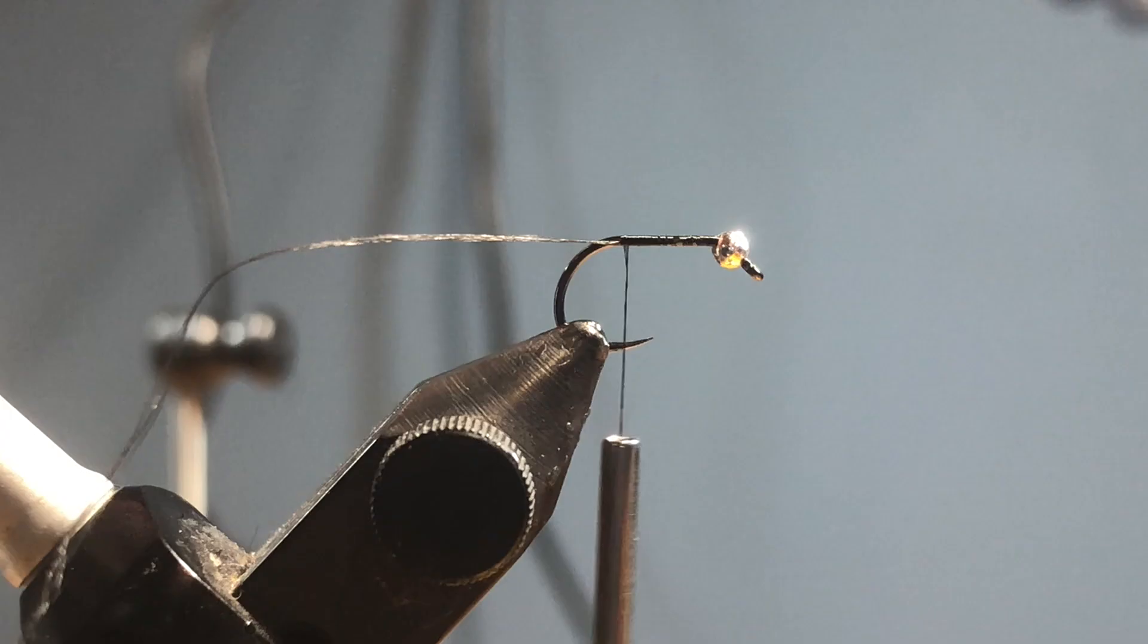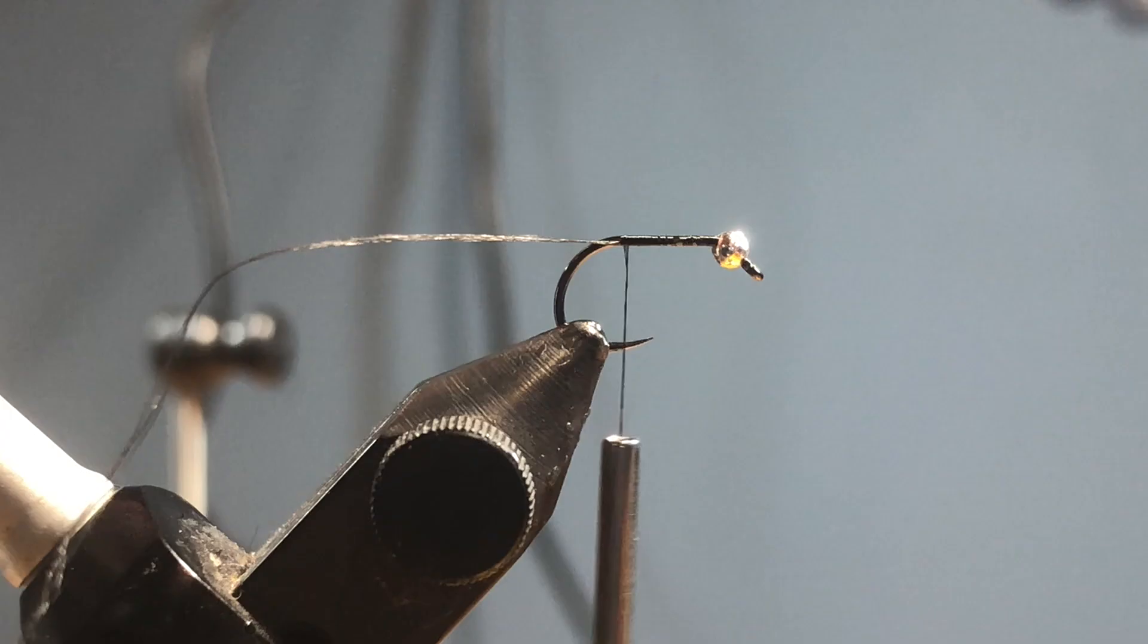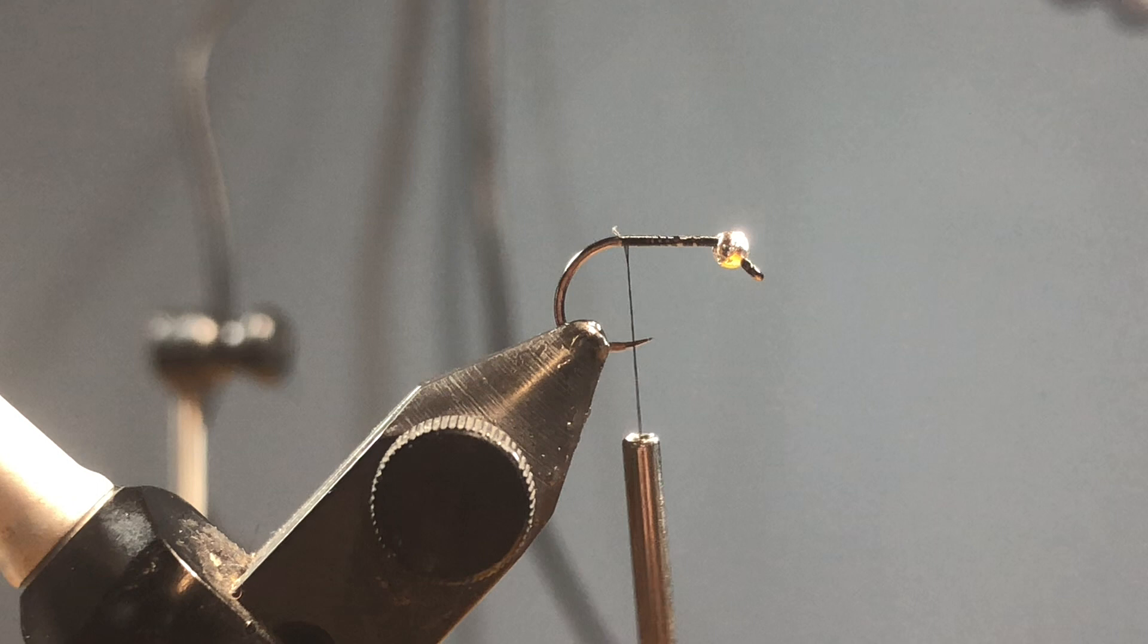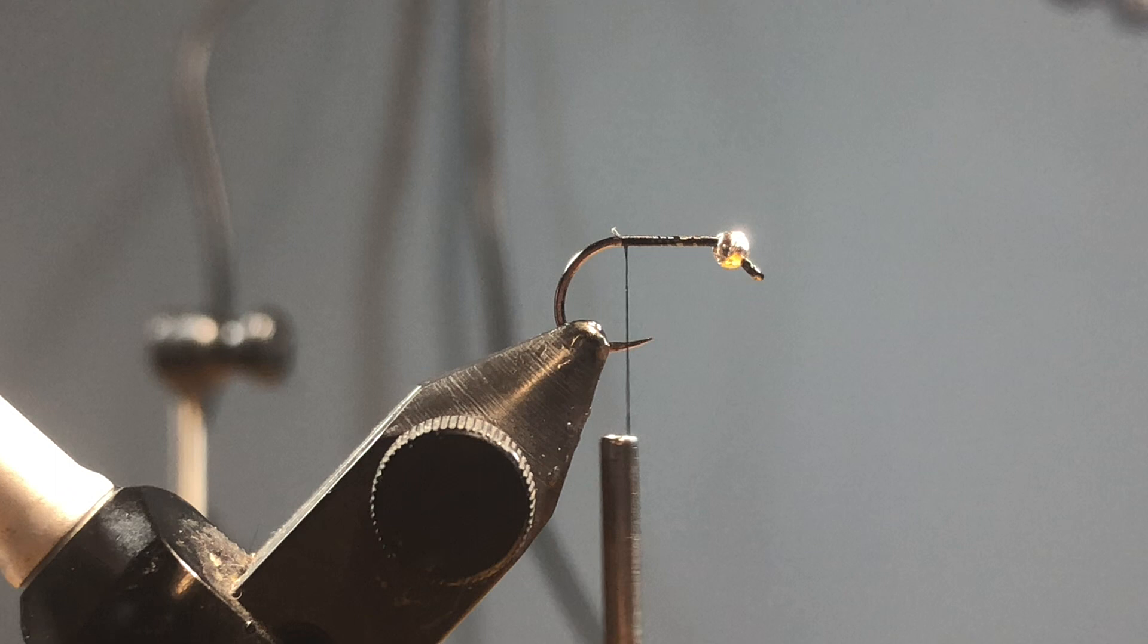The French jig, this is an awesome fly. It's quick to tie, catches fish like crazy. Shout out to Anthony for getting me all aboard the French jig train. Next I'm going to take some black Coq de Leon, anywhere from like four to six fibers should be good enough. Again, we're tying trout flies, it doesn't need to be out of control.